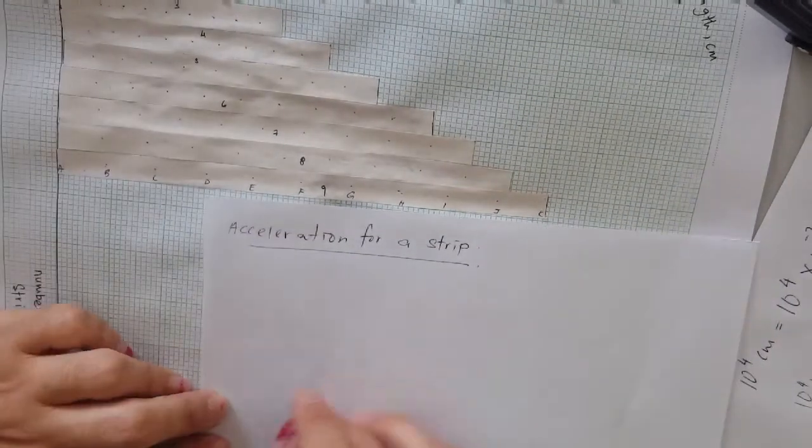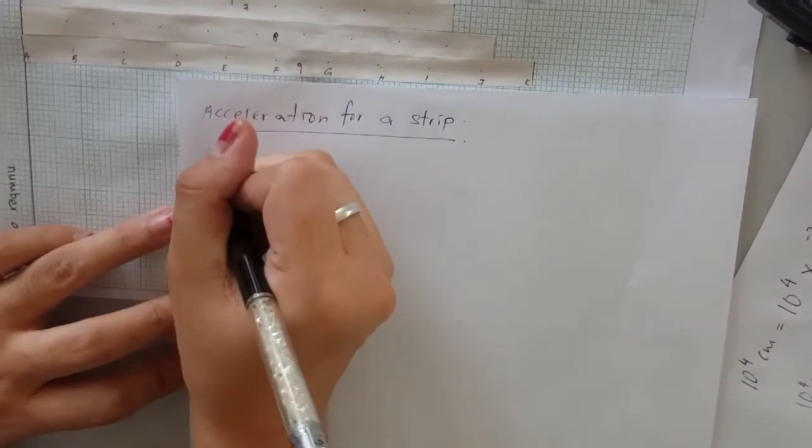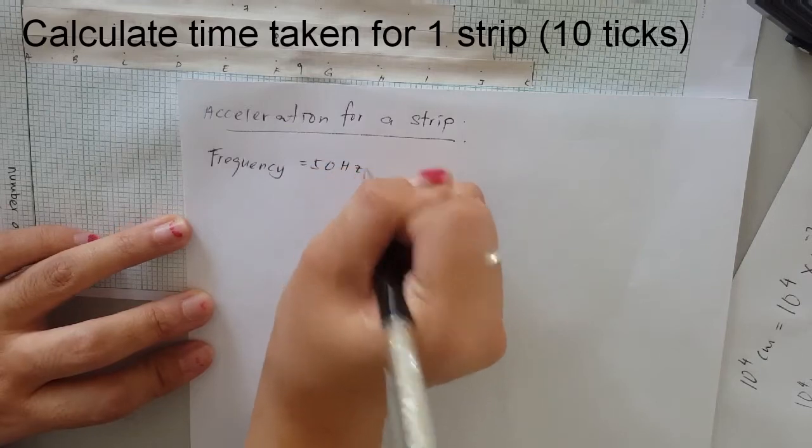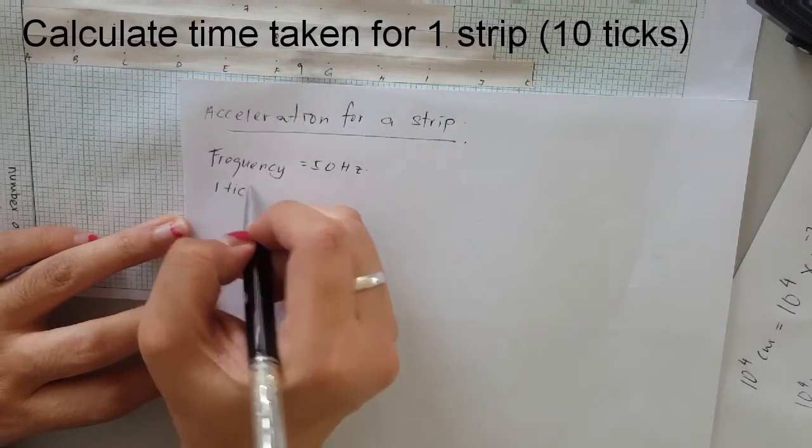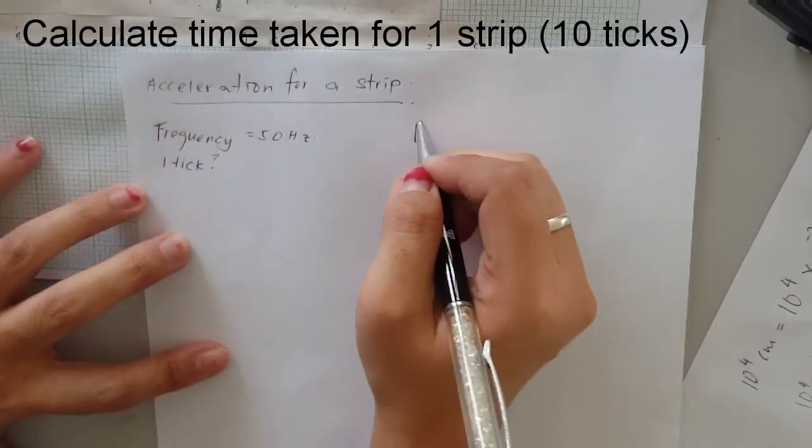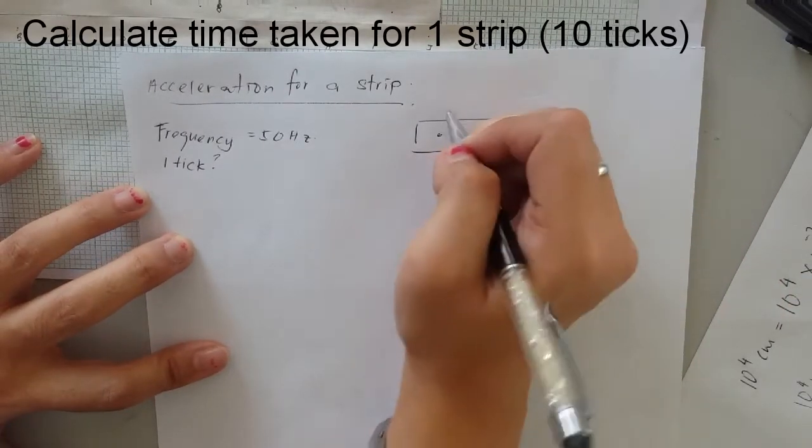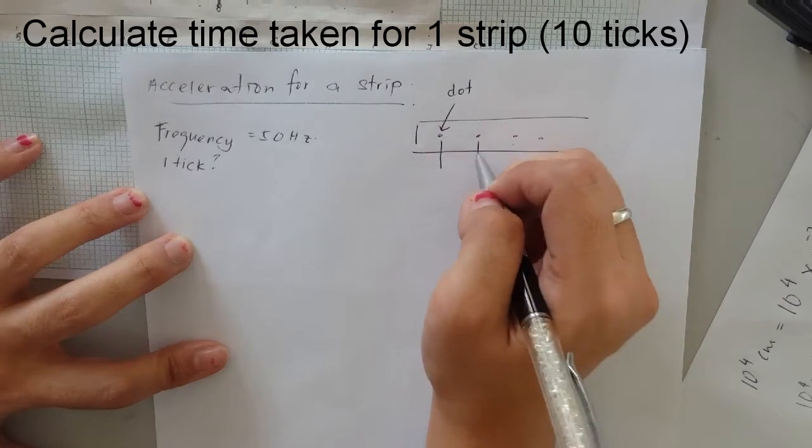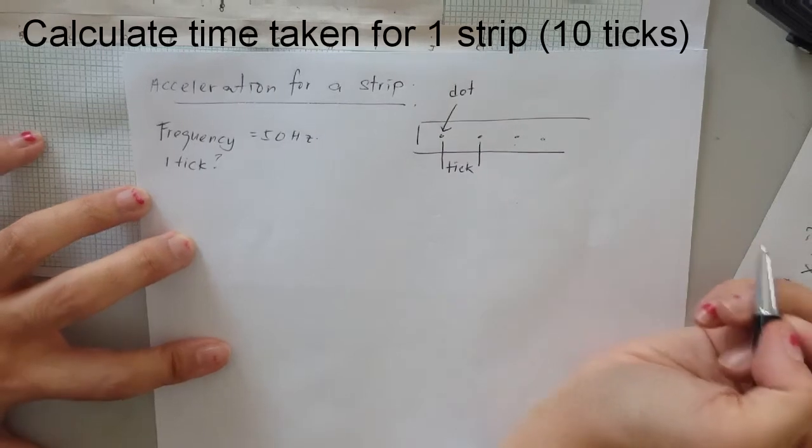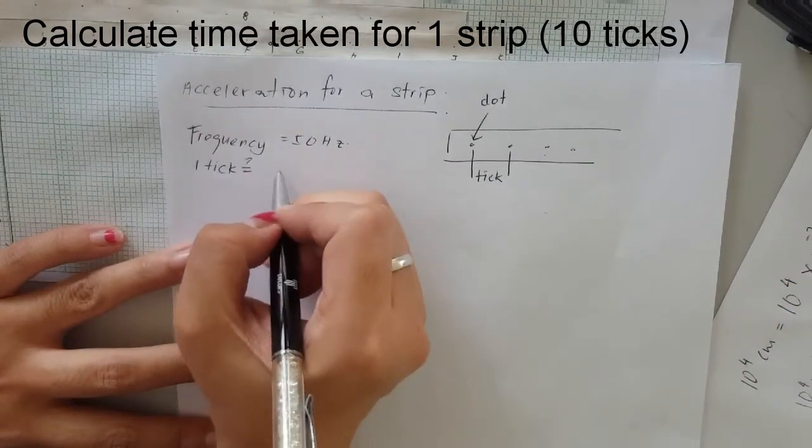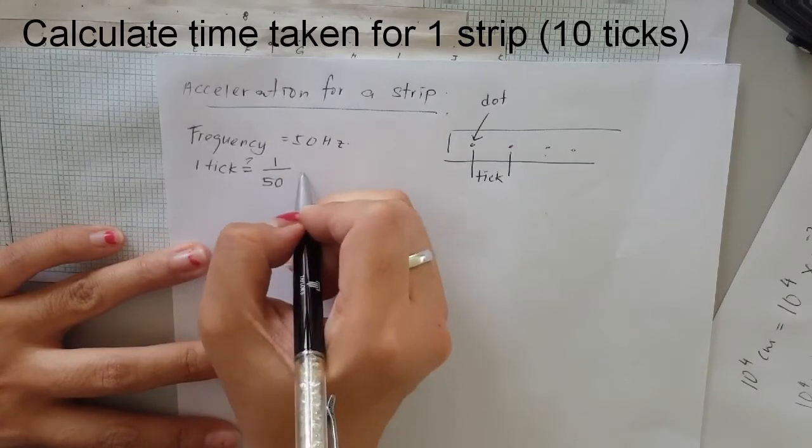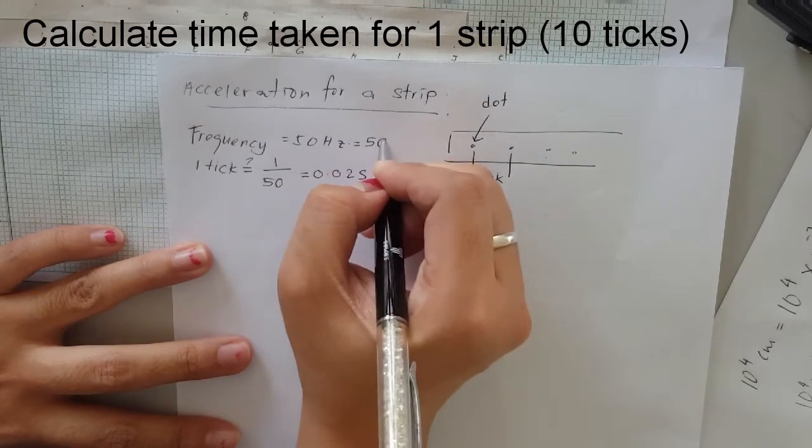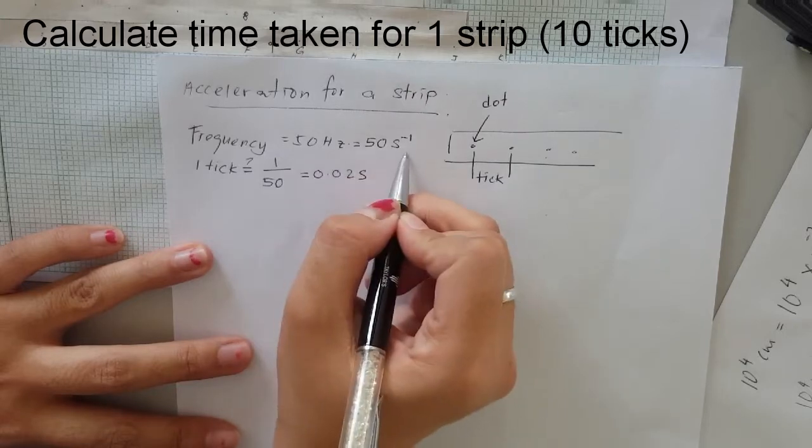We have to solve a few things. Number one, the ticker timer's frequency is 50 hertz. This means, what is one tick? So this is my strip. One of these is called a dot. I have four dots here. In between two dots, this is what we call a tick. One tick is equivalent to 1/50, which is 0.02 seconds, because hertz is also equivalent to second⁻¹.